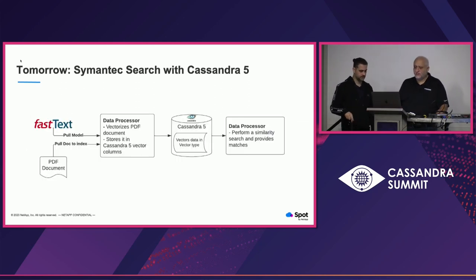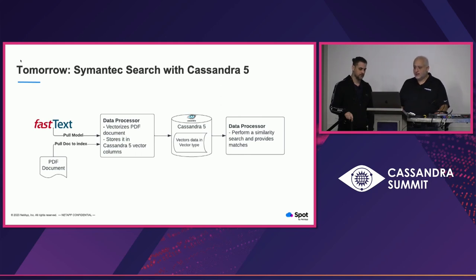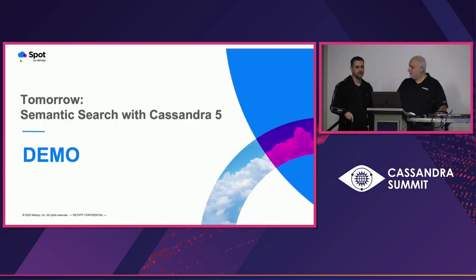The flow gets simplified with Cassandra 5 — no OpenSearch needed. You get the data model, run the document through it to generate vectors, then store both the metadata and vector data in Cassandra in the native vector data type column. This makes it easier for the data processor to do a search against Cassandra on the vector column and retrieve all the data in a single query.